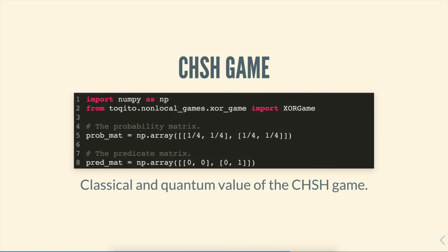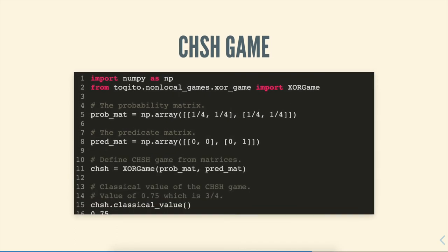So going to Toqito, we can actually specify any type of XOR game very simply by just specifying two pieces of information, namely the probability matrix, which we define on line 5, and the predicate matrix, which we define on line 8. The probability matrix simply encodes the probabilities with which Alice and Bob get the questions. In the CHSH game, we assume that the questions are given with equal probability, and there are four possible question pairs, 00, 01, 10, 11.